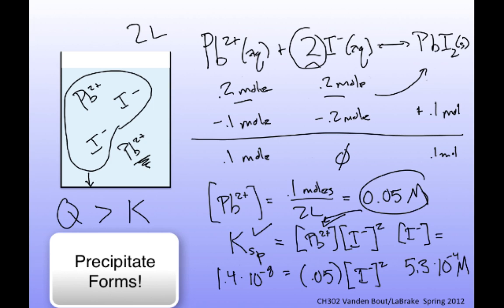At equilibrium we have less iodide, and we've lost the simple relationship where the iodide concentration is exactly twice the lead concentration. The reason is that the source of the lead and the source of the iodide were not both from lead iodide dissolving. Instead, one came from lead nitrate and the other from potassium iodide, and the final concentrations in the mixture depended on the concentrations of those separate solutions.